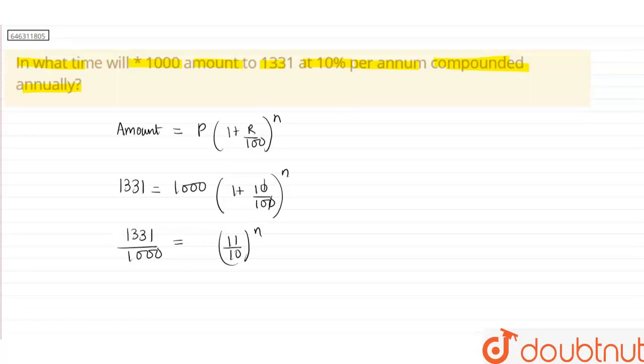Now, if you see that 11 cube is nothing but 1,331 and 10 cube is nothing but 1,000, right? So, we can write the left-hand side as 11 cube divided by 10 cube. This is equal to 11 by 10 to the power n.